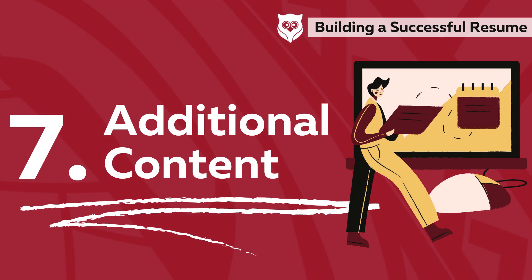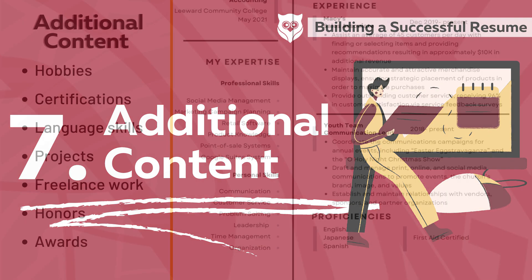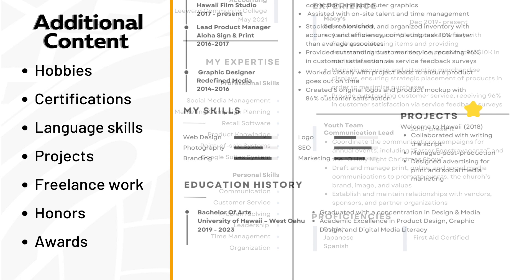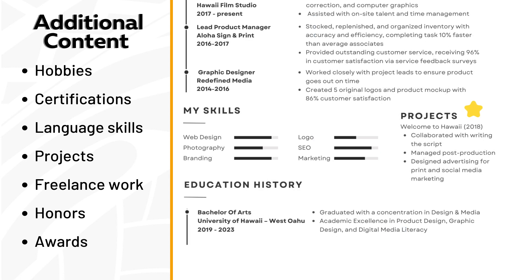Number seven, additional content. Other things you can include in your resume include your hobbies, certifications, language skills, projects or freelance work, and honors or awards. If the additional information does not relate to the job, do not include it. If you feel like it's relevant to the job and showcases your personality and/or accomplishments, you can include it.